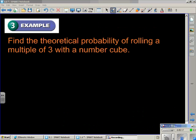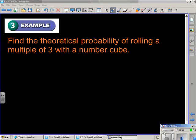In example three, we're being asked to find the theoretical probability of rolling a multiple of three with a number cube. Another way to refer to a number cube would be a die. You know, a pair of dice that you roll when you play craps. Well, a number cube would be a single die. It has numbers one, two, three, four, five, and six. So to find this probability, you need to determine how many multiples of three are on a number cube.